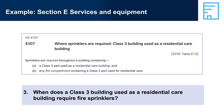Question 3: When does a Class 3 building used as a residential care building require fire sprinklers? A Class 3 building used as a residential care building requires fire sprinklers throughout the building and in any fire compartment that is used for residential care, regardless of the effective height of the building or any other factors. Note: there is a variation to this clause for Victoria.